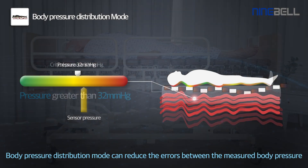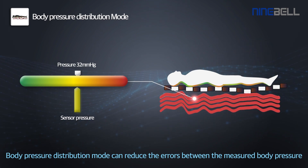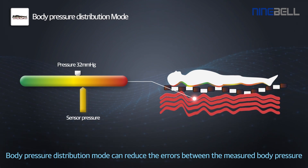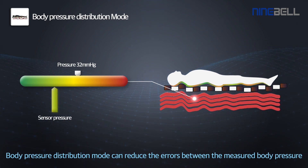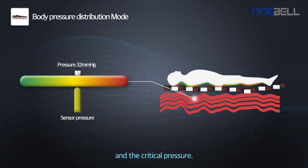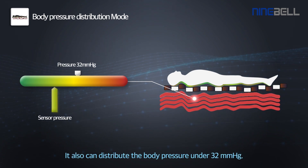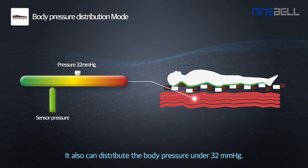Body pressure distribution mode can reduce the errors between the measured body pressure and the critical pressure, and can also distribute the body pressure to under 32 millimeters of mercury.